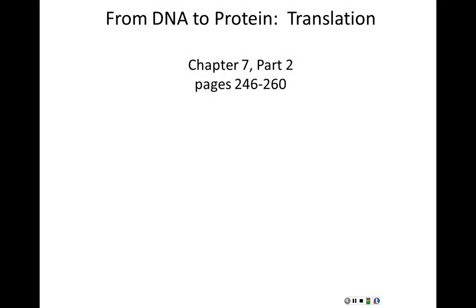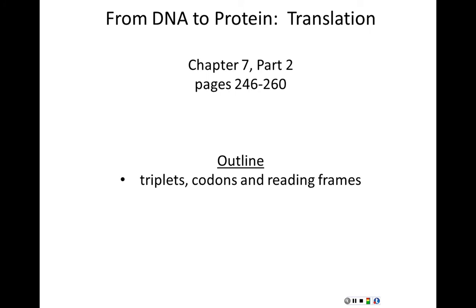Today we'll be finishing up chapter 7. This is the translation portion of that chapter, finishing the idea of how proteins are made from the information in DNA. In your textbook, this is pages 246 to 260, and it's worthwhile to say that this lecture is the last of the material you will see on exam 1. We're going to start off today's lecture talking about reading frames of DNA genes and mRNA transcripts from those genes, and this idea of triplets or codons.